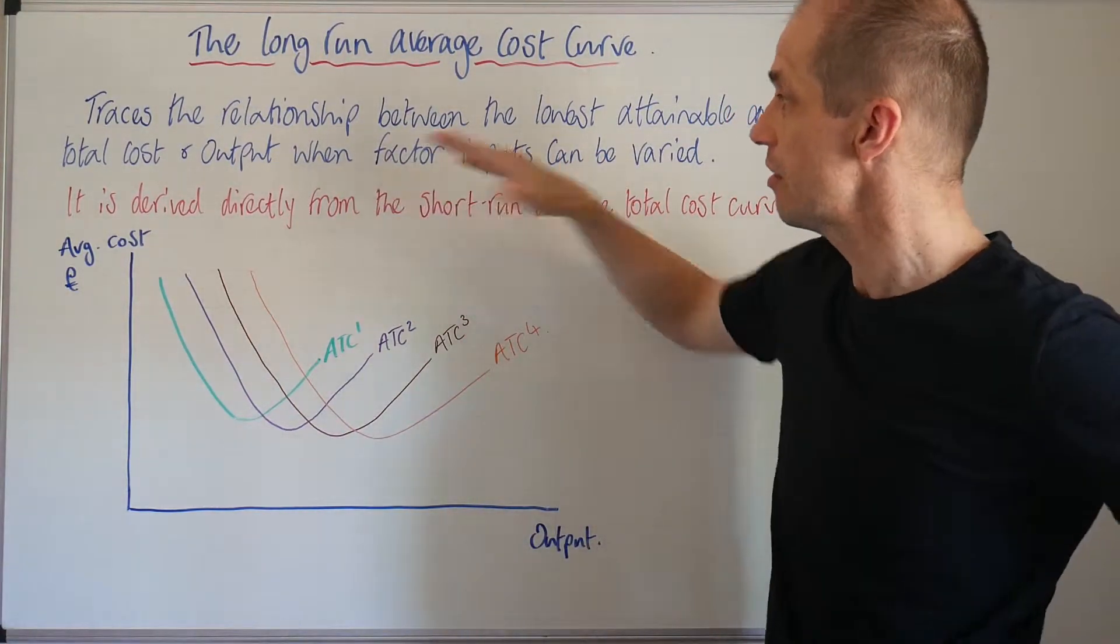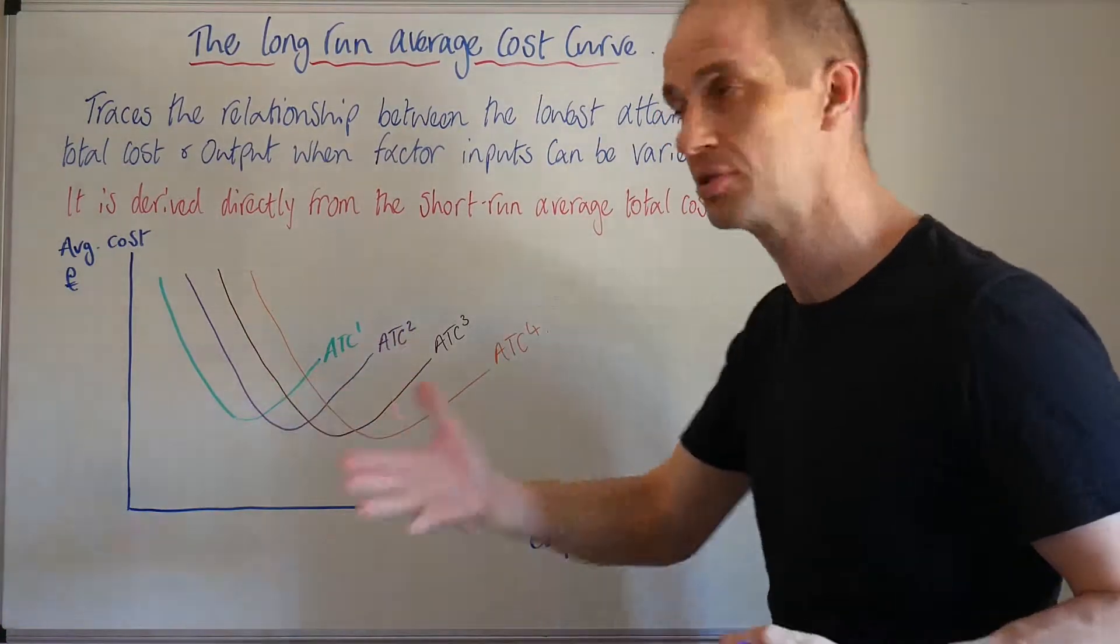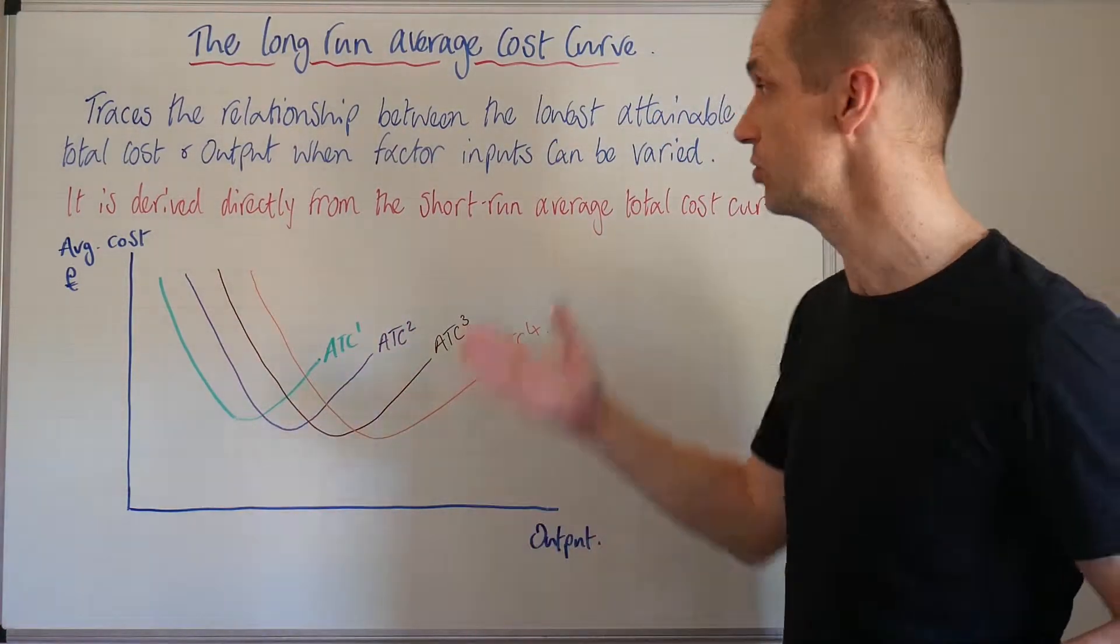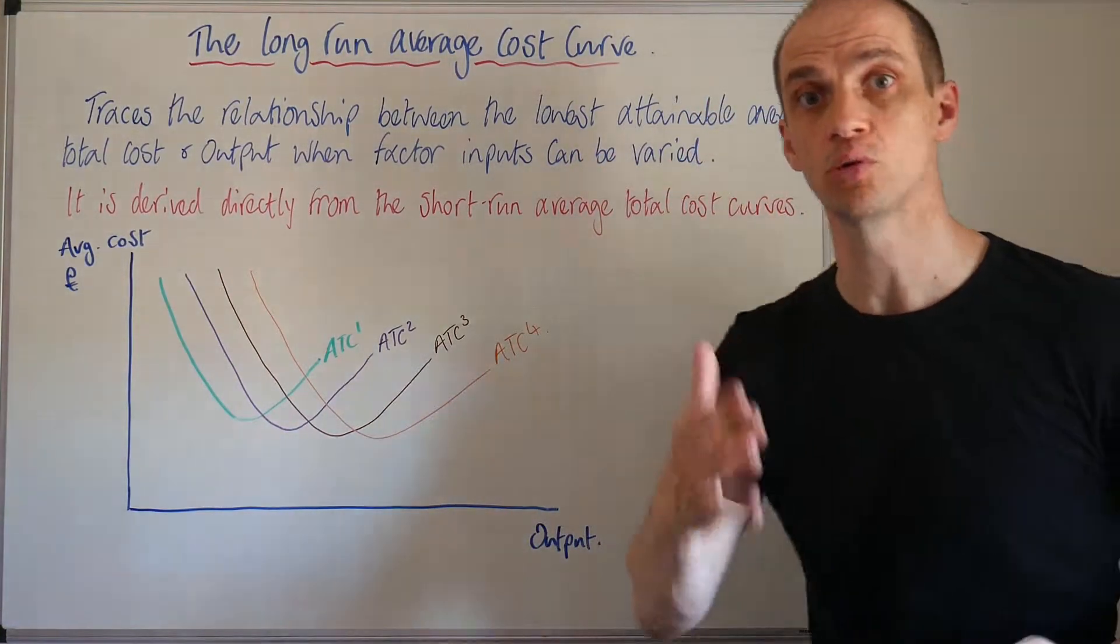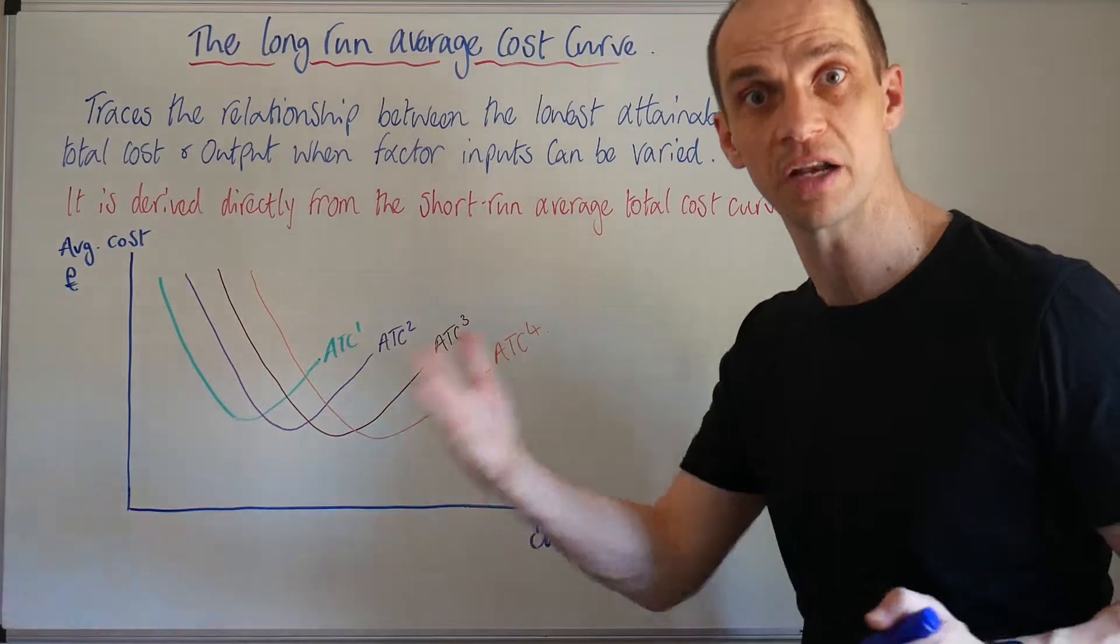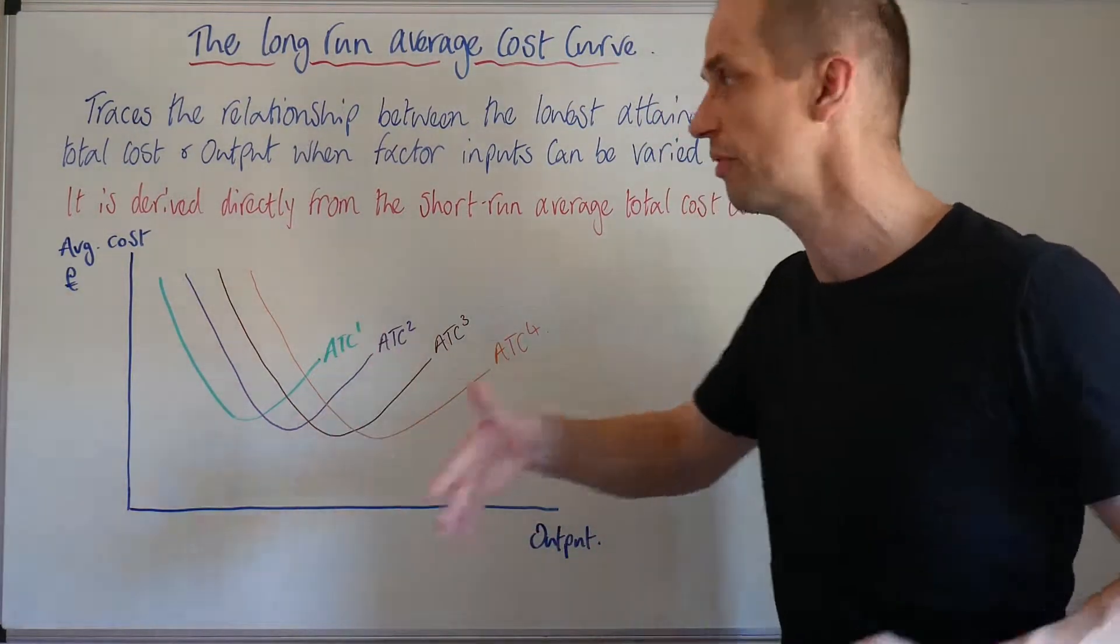So we can see this here. Factor inputs - land, labour, capital, even the enterprise used - can all be varied in the long run. So you can move to a different site, you can utilise better machinery, you can increase your labour force and so on.